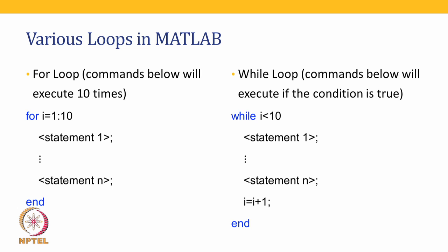The two main loops in MATLAB are the for loop and the while loop. The for loop is of the form: for i equal to one colon ten, a bunch of statements, followed by the command end. These statements are going to be repeated ten times. If we wanted to repeat it for values of i equal to one, three, five, and so forth until ten, we use the colon notation: one colon two colon ten, stepping in twos.